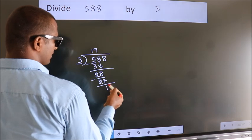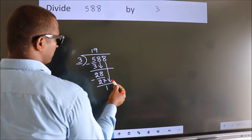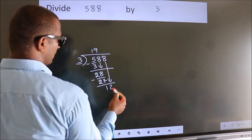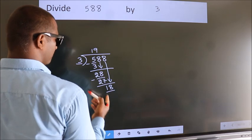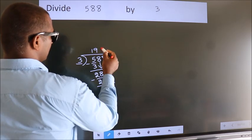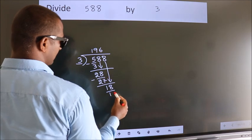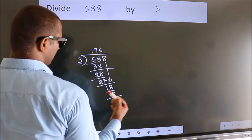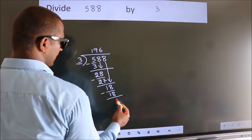After this, bring down the beside number. So, 8 down. So, 18. When do we get 18? In 3 table. 3 6 18. Now, we subtract. We get 0.